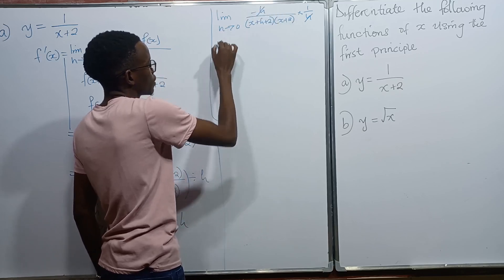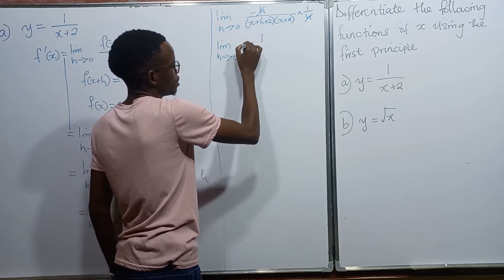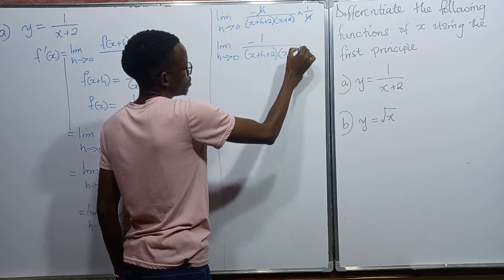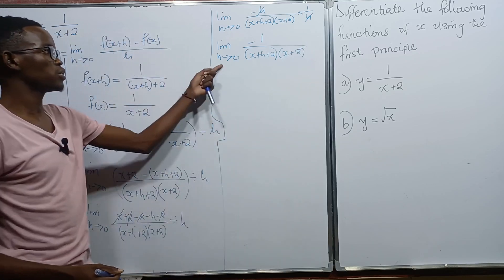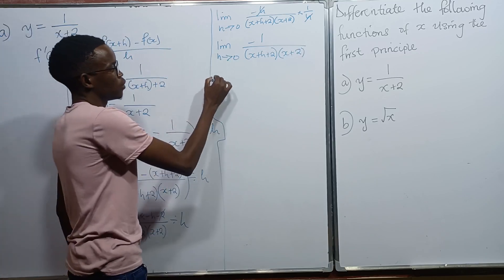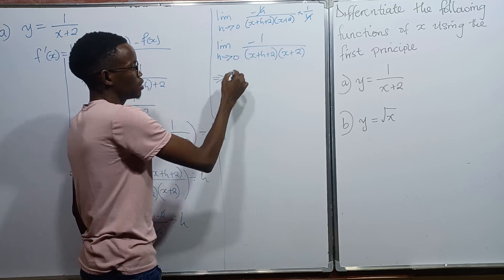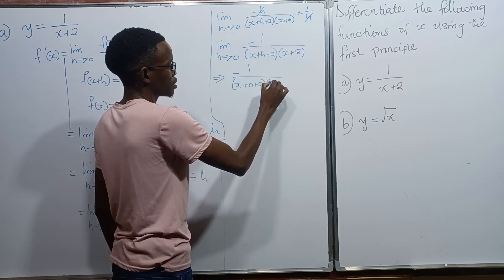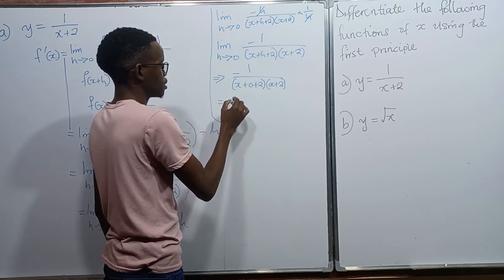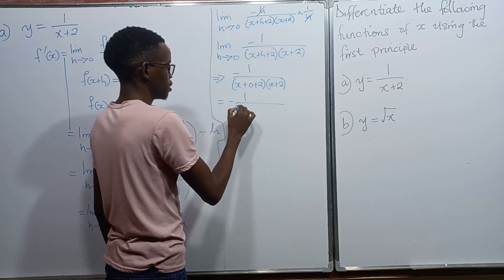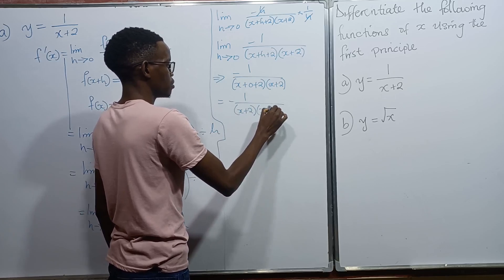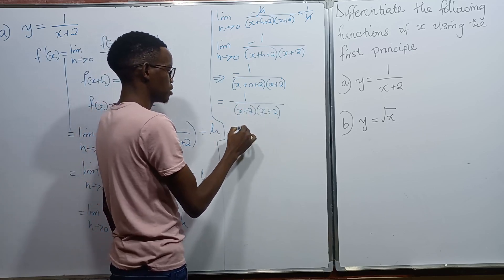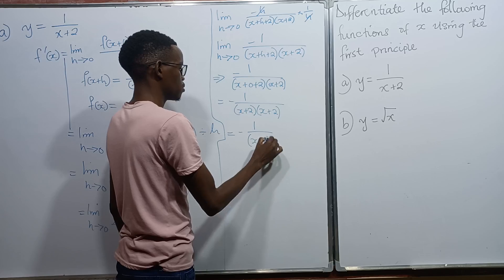We now have the limit as h approaches 0 of negative 1 divided by (x plus h plus 2)(x plus 2). At this point we can't simplify further, so we substitute h equals 0. This gives us negative 1 divided by (x plus 0 plus 2)(x plus 2), which simplifies to negative 1 over (x plus 2) squared.